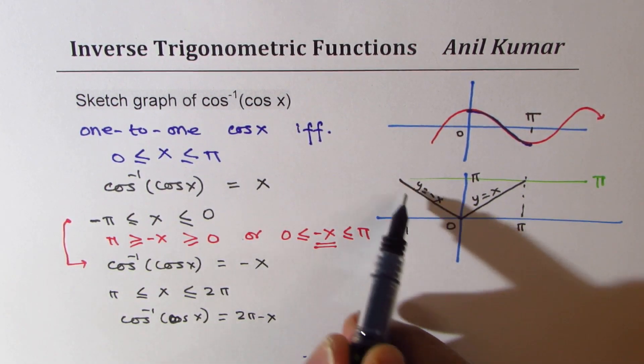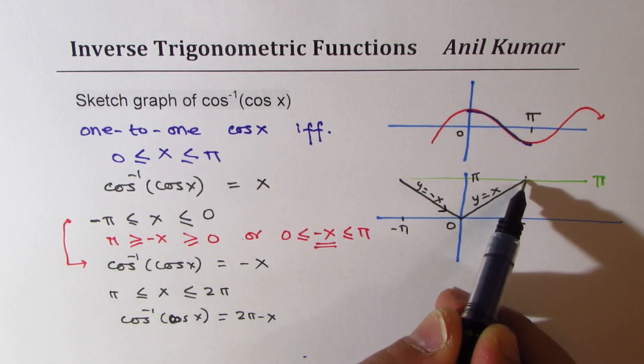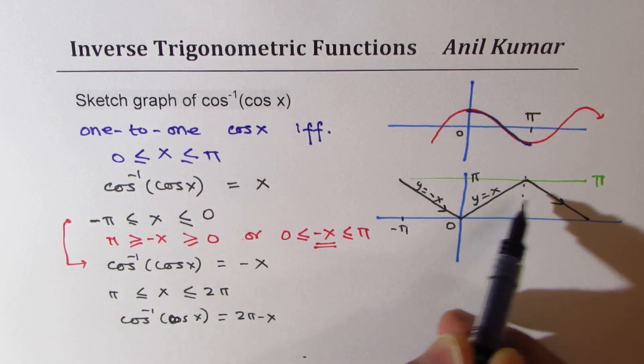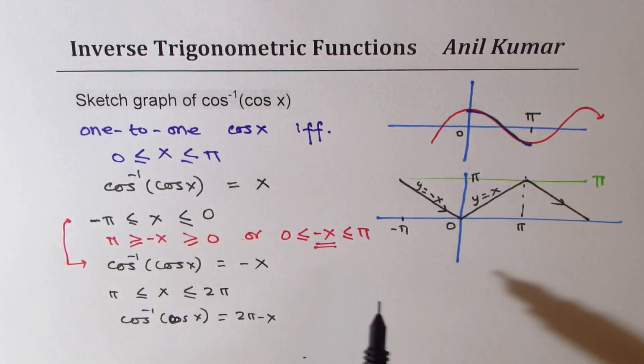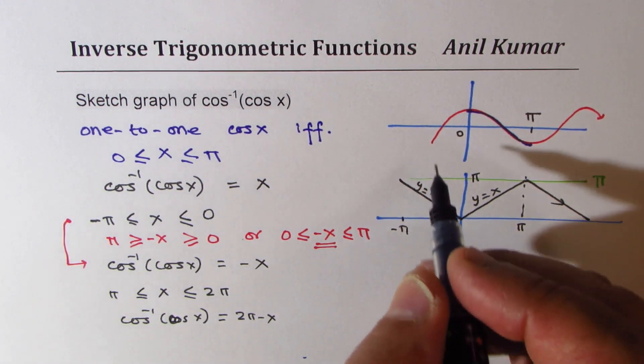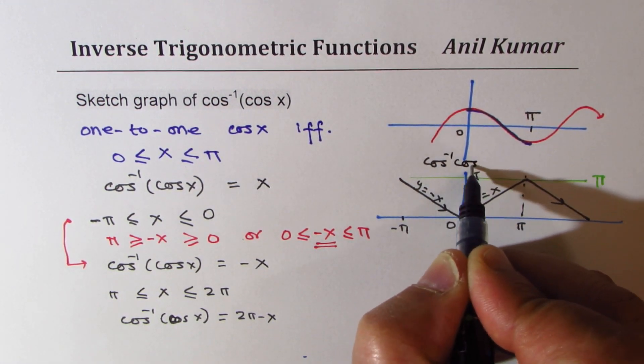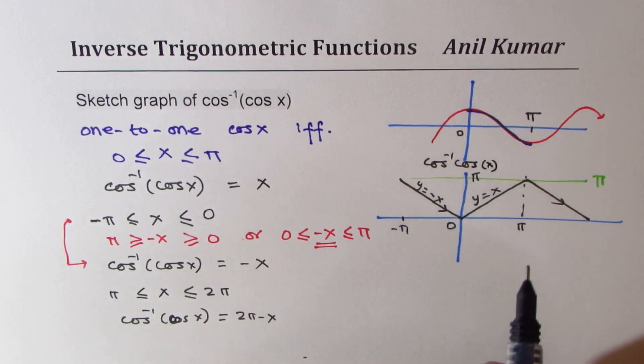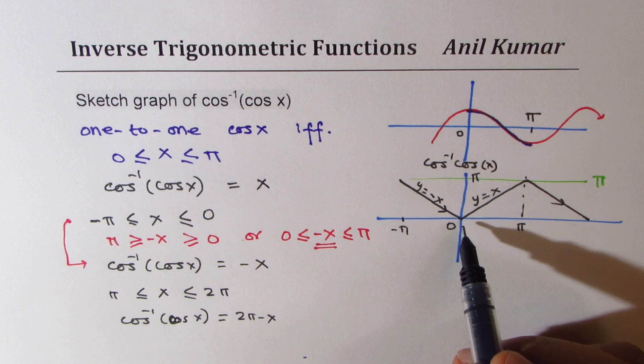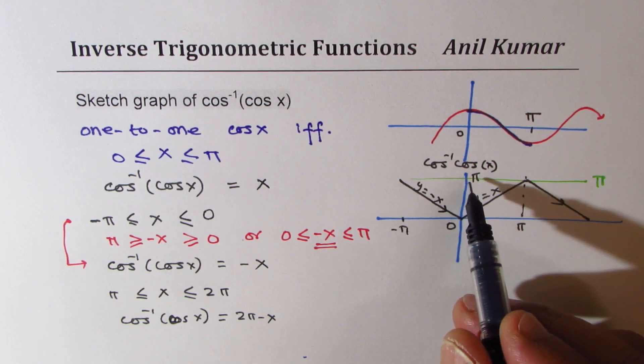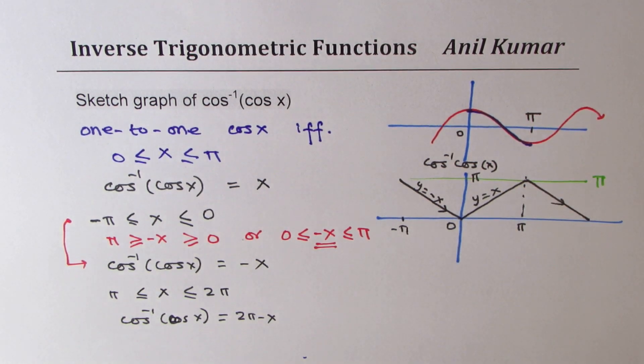The graph will be kind of parallel to this. So, it will be like this. So, that is how you are going to see the graph of cos inverse cos x. It will vary between 0 to pi, as shown in the particular diagram.